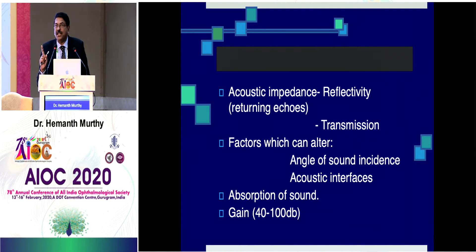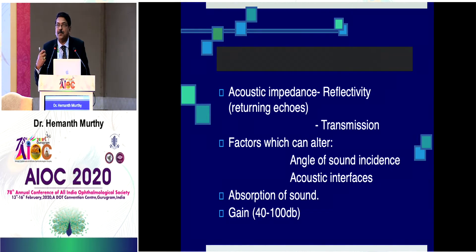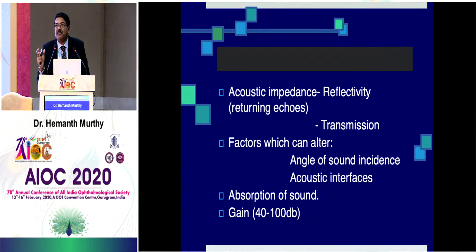You also need to know that the factors that could alter this are the angle of sound incidence and the acoustic interface. Tissue absorbs sound, so there is both transmission and absorption. Absorption is highest in dense tissue and very low in less dense tissue — for example, fat would have less absorption of sound.